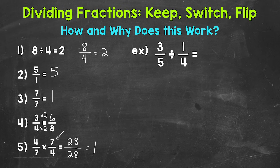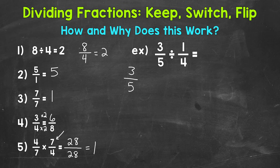Now we are ready to see why we keep switch flip — or keep change flip, or multiply by the reciprocal. All of those mean the same thing. Let's use 3 fifths divided by 1 fourth for our example. We know we can set up a division problem as a fraction, since fractions represent division. So 3 fifths divided by 1 fourth becomes 3 fifths over 1 fourth — a fraction over a fraction, called a complex fraction.